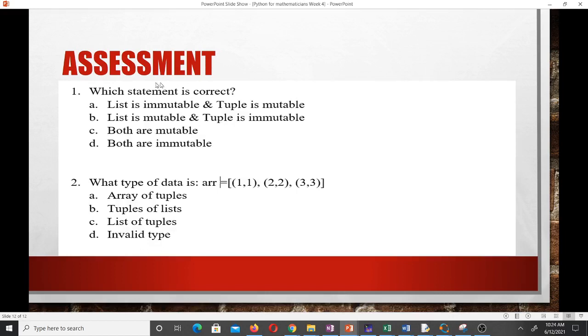Our assessment says which statement is correct. List is mutable and tuple is immutable, that's the correct statement. What type of data is this? You can see that the answer is list of tuples. We have a list and the list contains tuples, so it's a list of tuples, that's C.